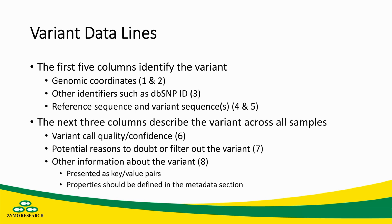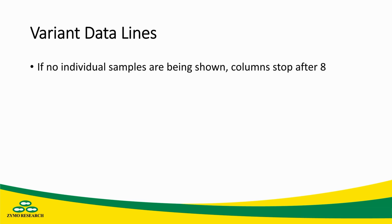The next three columns describe the variant across all samples. Column six describes the variant quality or confidence in that variant. Column seven contains filtering data, which is essentially reasons to potentially doubt that variant, or the word PASS if none were found. Column eight will have other information about the variant presented as key value pairs, with these properties defined in the metadata section. If no individual samples are being shown, the columns will stop after column eight.